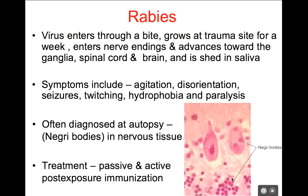Interestingly, this infection is so slow — starting in the tissue and moving towards the central nervous system — that we can actually vaccinate you post-exposure. If you've been bitten and we think you may have been exposed to rabies, we can give you your vaccine post-exposure, and you will make your immune response and be able to defend yourself before rabies actually gets to your nervous system. This is one of the few places where we can do that.